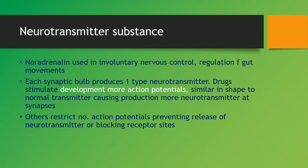Regarding neurotransmitter substances: there are different ones, but acetylcholine is the one to use in your answers unless specified otherwise. There is also noradrenaline, which is used in involuntary nervous control where it regulates gut movement. Each synaptic bulb will produce one type of neurotransmitter. Drugs can stimulate the development of more action potentials by being similar in shape to the normal transmitter, causing the production of more neurotransmitter at synapses.